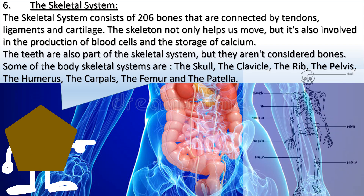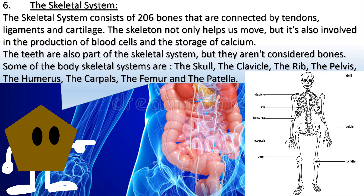6. The skeletal system consists of 206 bones that are connected by tendons, ligaments, and cartilage. The skeletal system not only helps us move, but it also involves the production of blood cells and the storage of calcium. The teeth are also part of the skeletal system, but they aren't considered bones. The skeletal system consists of the skull, the clavicle, the rib, the pelvis, the humerus, the carpals, the femur, and the patella.